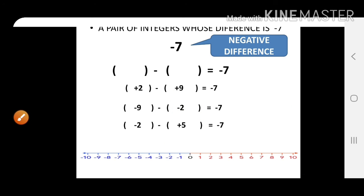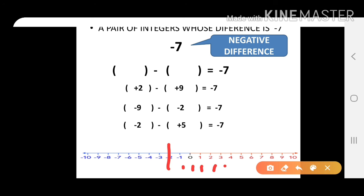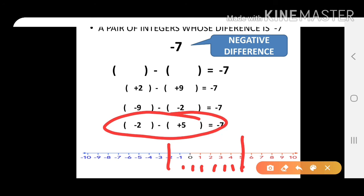We can try any numbers where the gap is minus 7. Take a low number first, like minus 2. From minus 2, go 7 steps to the right: 1, 2, 3, 4, 5, 6, 7 — we reach plus 5. So minus 2 and plus 5: the gap between minus 2 and plus 5 is minus 7, because we are going from low to high.